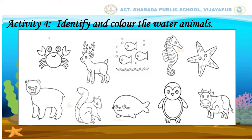Kids, let us see one more. Tell me kids, which animal it is? Yes, you are right. It is a starfish. Now, we will colour it like this. In the same way, you have to identify the water animals and colour them to complete this activity. Okay children?